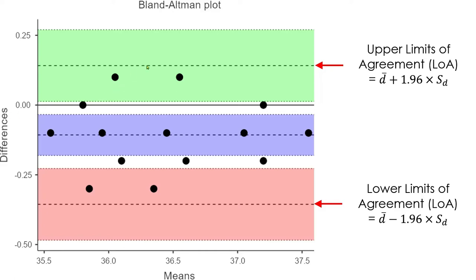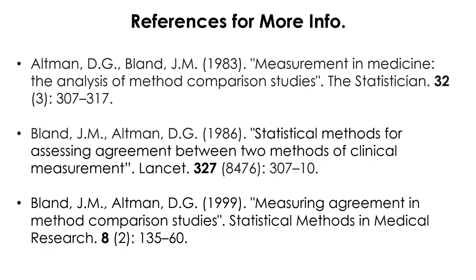The green area represents the 95% confidence interval for the upper limits of agreement, and the red band represents the 95% confidence interval for the lower limits of agreement. These LOAs, the limits of agreement, this is not confidence interval, this is just 95% limits of agreement, because these are literally standard deviation, not standard error of the mean. That's pretty much everything about the Bland-Altman analysis.